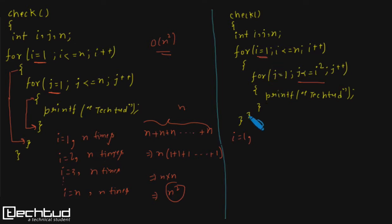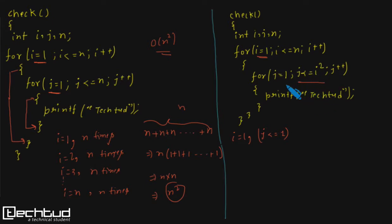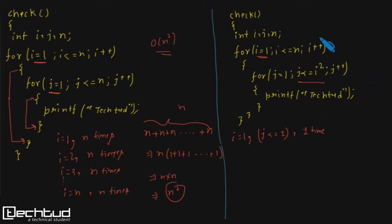For i equals to one, the condition is j less than or equal to i squared, which is one squared, meaning one. Initially j equals one, and the condition is true, so the print statement executes once. Then j becomes two, the condition is false, and we exit the inner loop. So for i equals to one, the print statement executes only one time.